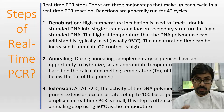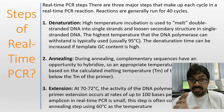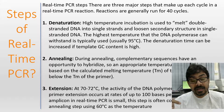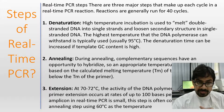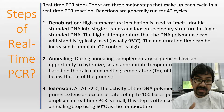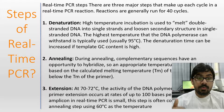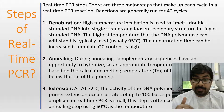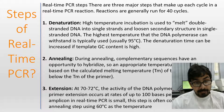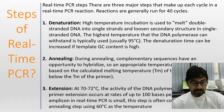Denaturation is performed at 95°C, sometimes 98°C, depending on the GC content — higher GC content requires more time to denature. The next step is annealing, where primers bind to the complementary sequence on the single-stranded DNA. During annealing, complementary sequences hybridize with the single-stranded target DNA. The appropriate annealing temperature is based on the calculated melting temperature of the primers used — for COVID detection, different primer-probe sets are used.